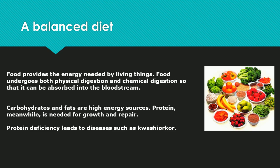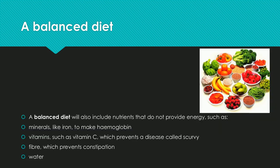When we talk about nutrients, we will talk about carbohydrates, fats, and proteins. Carbohydrates and fats are high energy sources. Proteins are needed for growth and repair, and protein deficiency leads to a disease such as kwashiorkor.